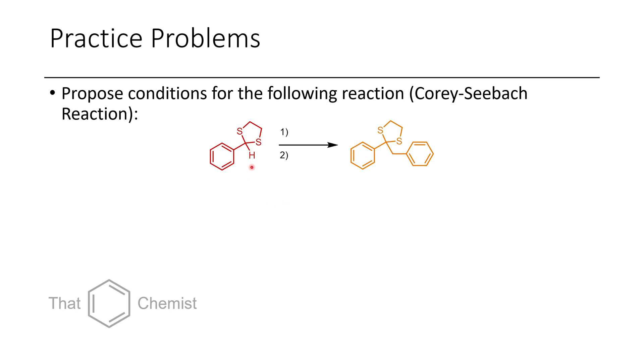Now in this next example, we have this dithiane, which is a dithioacetal. And this reaction is known as the Corey-Seabach reaction. And so the reason that this works really well is that's a rather acidic proton. And so it's quite easy to lithiate that position. And so here we can see that there's a disconnection in this position. And so first what happens is we lithiate that position, forming this lithiodithiane species, which is then a good nucleophile, and it can attack benzyl bromide, displacing bromide as a leaving group, forming this dithioacetal as your product.